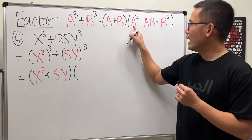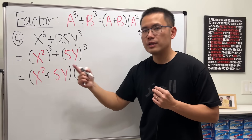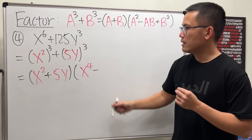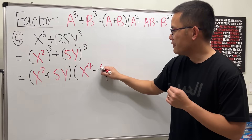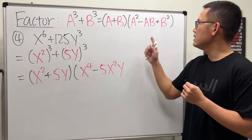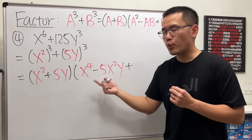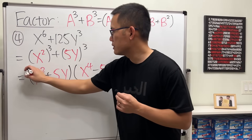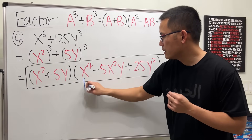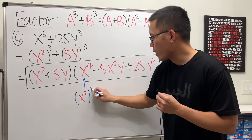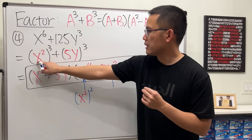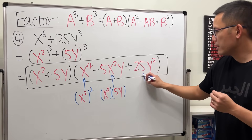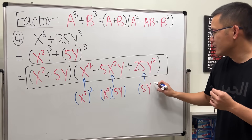For the second factor, we square x squared: multiplying the exponents gives x to the fourth. Then we subtract ab: 5 times x squared times y gives 5x squared y. Lastly we add b squared: 5 squared is 25 and we square the y, giving 25y squared. That's x to the fourth minus 5x squared y plus 25y squared — this is the most we can do.